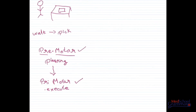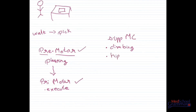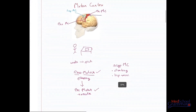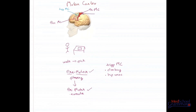Now let's look at the supplementary motor cortex. The supplementary motor cortex is a phylogenetically older part, related to functions that were useful in ancient times. For example, actions like climbing and the movements of the hips while walking on all four limbs are controlled by the supplementary motor cortex. So the motor cortex consists of the primary motor cortex, the premotor cortex, and the supplementary motor cortex, each with distinct functions integrated to perform a task.